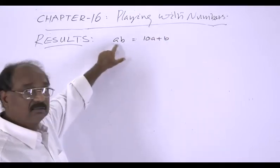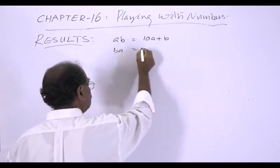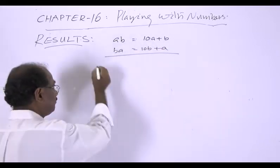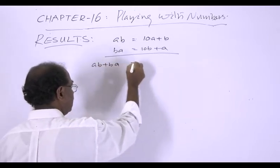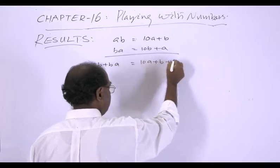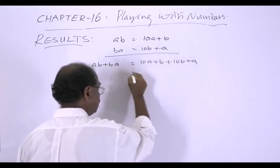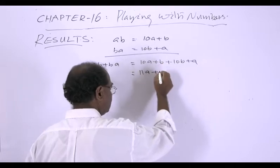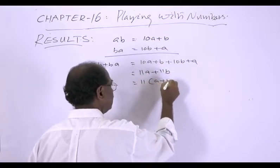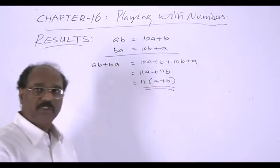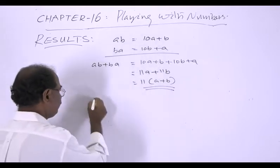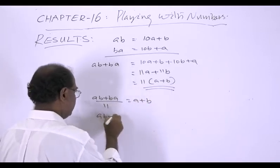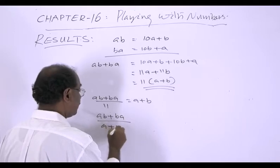And suppose we reverse this, so we get BA. BA is equal to 10B plus A. Now suppose we add these two: AB plus BA equals 10A plus B plus 10B plus A, which equals 11A plus 11B, or 11 into A plus B. This shows that AB plus BA divided by 11 equals A plus B, and AB plus BA divided by A plus B equals 11.